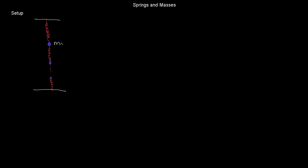So all the springs are attached to either a mass, a wall, or two masses. Mass 1, mass 2, keep going — mass n. Suppose I have masses m1 through mn. I have n masses, and they're attached by — how many springs? It's exactly one more spring than I have masses. I have n plus 1 springs. And let me assume that the stiffness of the springs varies.